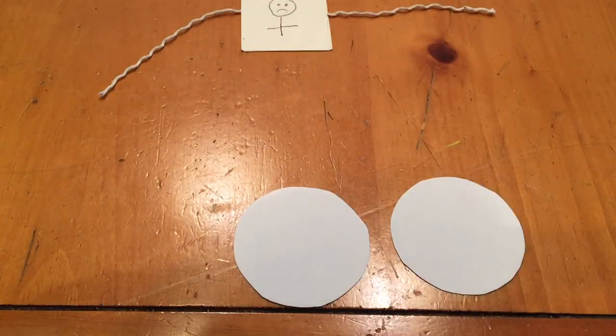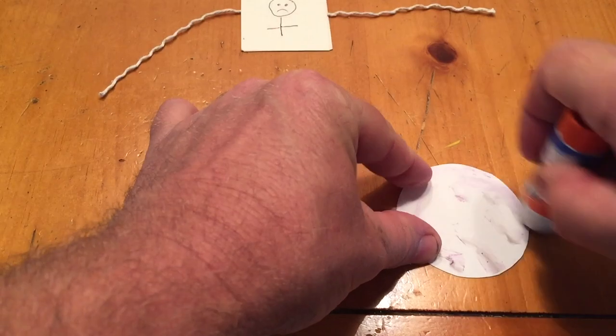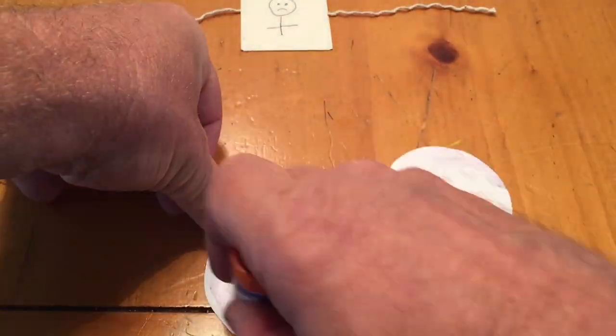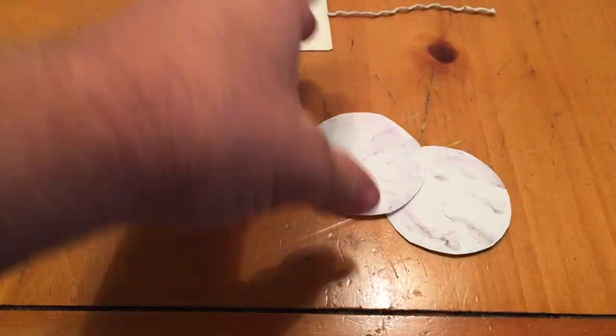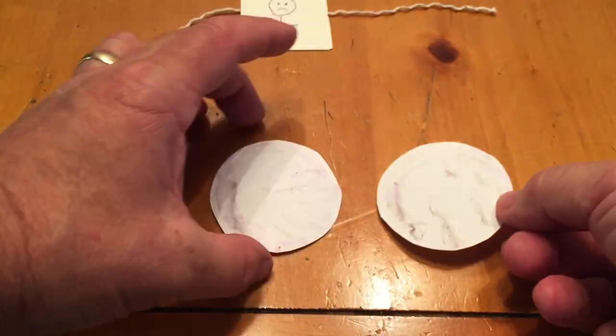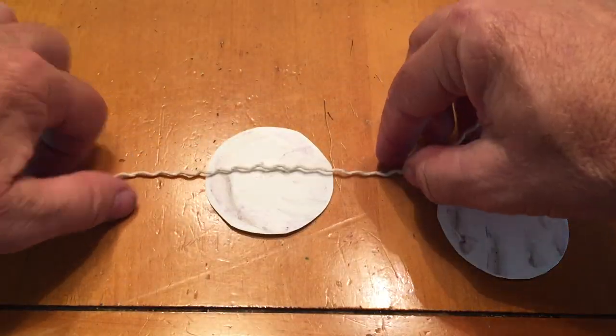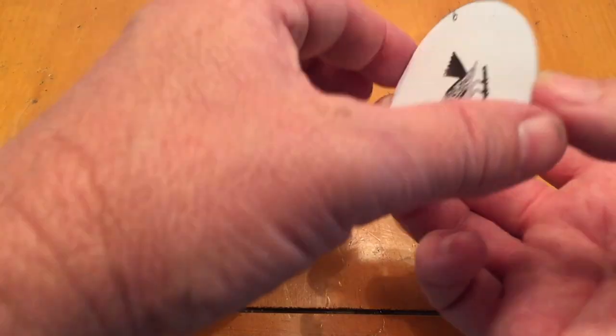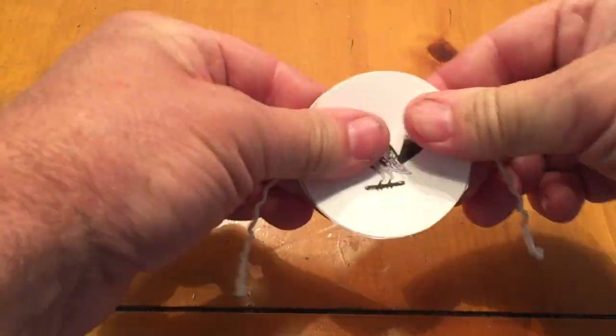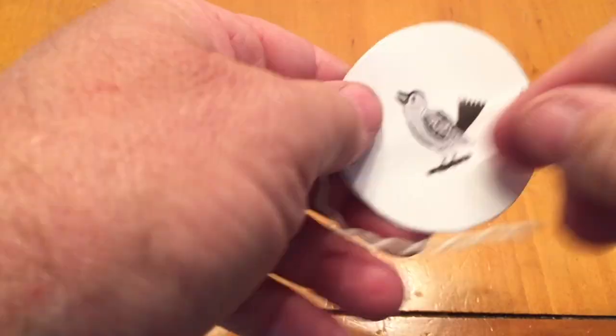Now it's important which direction they go. You want to make sure that the bird is right side up and the cage is upside down. So then you put your string right down in the middle, bird's right side up, and then you'll have the cage the other way.